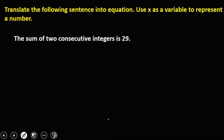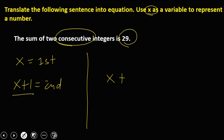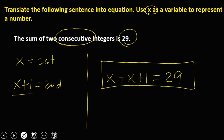'The sum of two consecutive integers is 29.' Since our variable is x, let x be the first integer. Since they are consecutive, x + 1 is the second integer. The sum is 29, so: x + (x + 1) = 29. Simplified: 2x + 1 = 29.